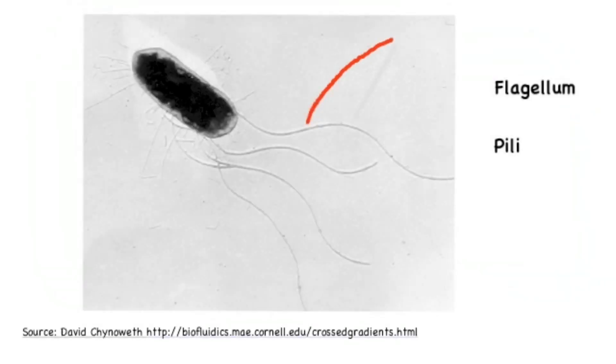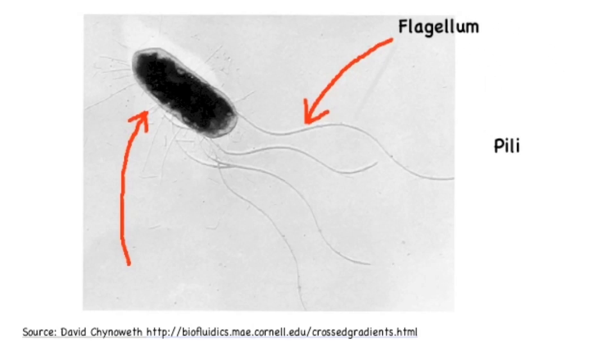Now on this image we can clearly see the pili and the flagellum. The flagellum is the longer whip-like appendages that you see coming out of the end, while the pili are the shorter hair-like appendages you see around the sides.